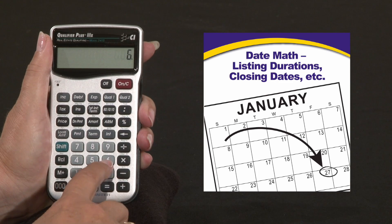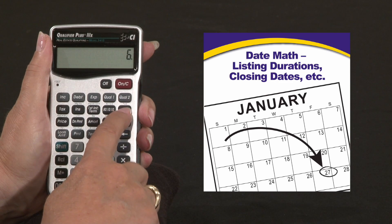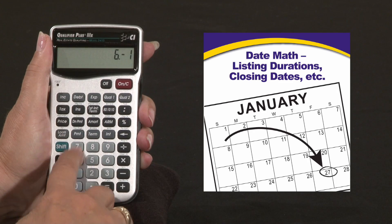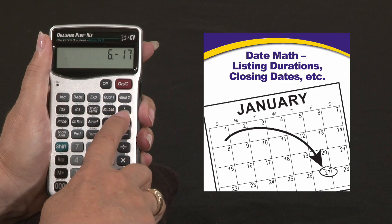So we're going to enter 6 month. We're going to put a colon in there and we're going to say it's the 17th and we're going to use a colon.